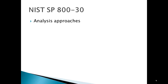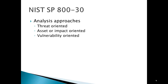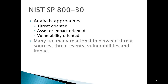The NIST standard advocates several analysis approaches. You can use a threat-oriented approach where you start with a description of the threat environment. An asset or impact-oriented approach where you look at the resources you're attempting to protect and their value to the organization. Or a vulnerability-oriented approach where you survey the possible ways that any arbitrary threat could take advantage of your environment. Keep in mind there's a many-to-many relationship between threat sources, threat events, vulnerabilities, and impact — a threat can use multiple vulnerabilities to impact multiple assets, and completely different threats can take advantage of the same vulnerability.